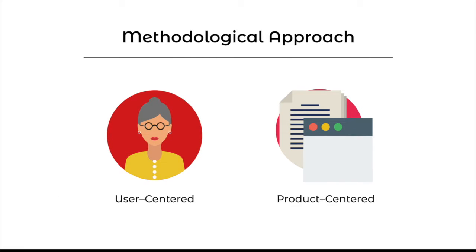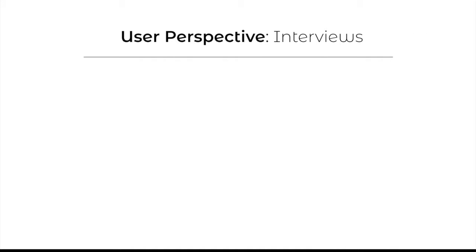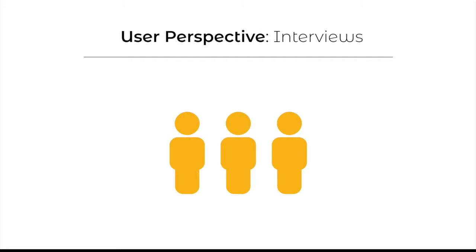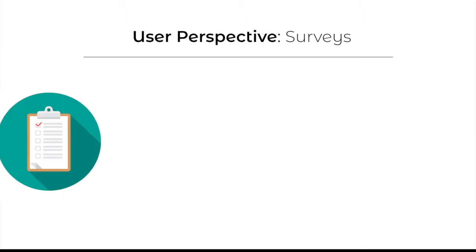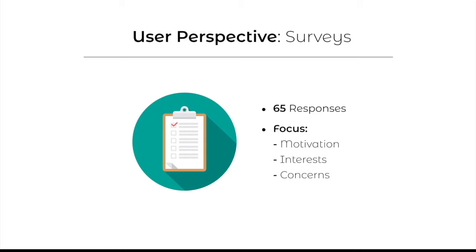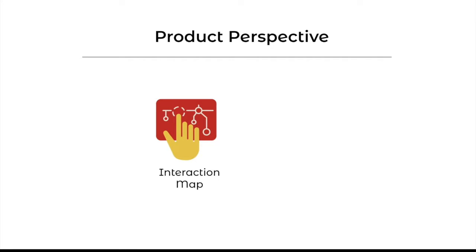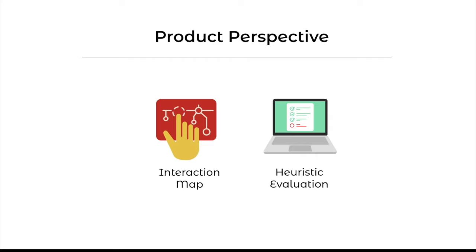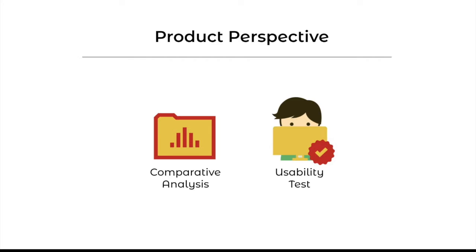To achieve this goal, our team approached the problem from two main perspectives: the users and the product. To understand user needs, our team interviewed five people ranging from 39 to 79 years old and synthesized those findings into three personas. Based on those personas, we designed a survey to grasp users' motivation, interests, and concerns when using a vehicle configurator. The survey resulted in 65 effective responses and informed the tasks we chose for usability testing. From the product perspective, our team created an interaction map, conducted heuristic evaluations, and performed a comparative analysis with 10 competitors' configuration tools. We also conducted usability tests with five participants ranging from 27 to 66 years old, whose interactions with the Club Car configurator were recorded and analyzed.